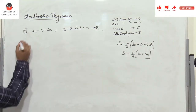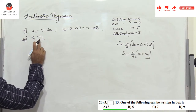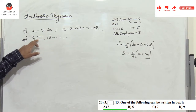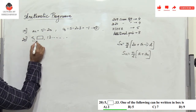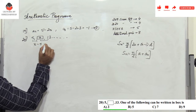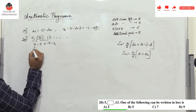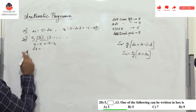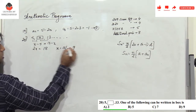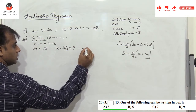Problem 20: the arithmetic progression is 5, __, 13, ... Find the missing number. Let the missing number be x. Since the common difference is constant: x - 5 = 13 - x, giving 2x = 18, so x = 9. Option D is the right answer.